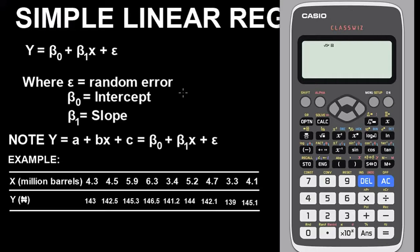Before I begin to solve this problem, if you look at the slide I have here, this is the formula for simple linear regression: Y = β₀ + β₁x + ε, where ε stands for random error, β₀ stands for intercept, and β₁ stands for slope. This is the formula for simple linear regression.